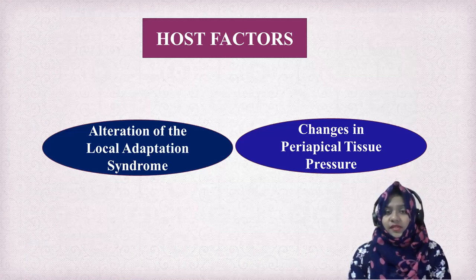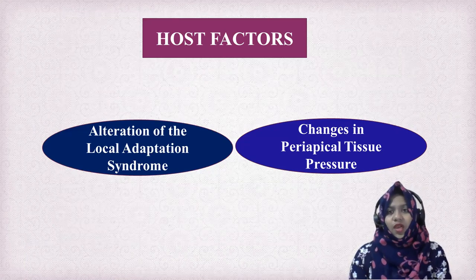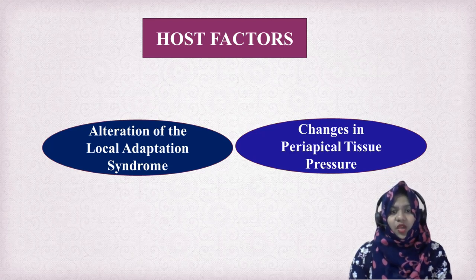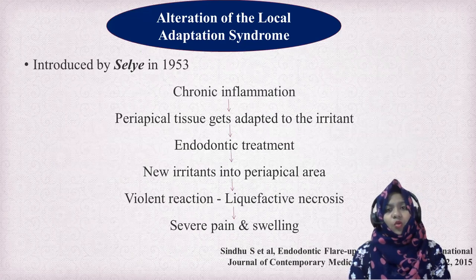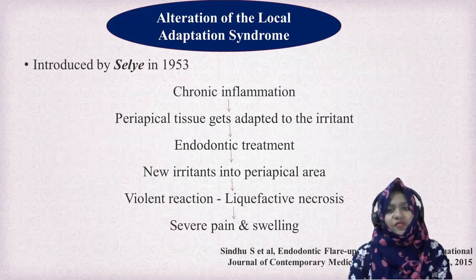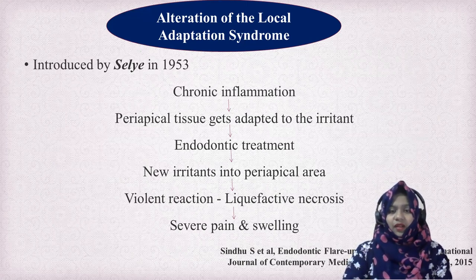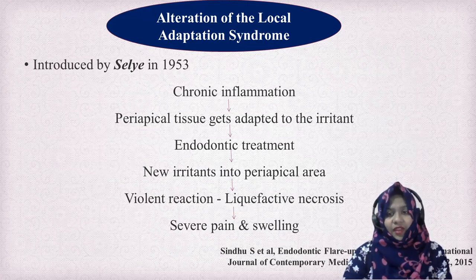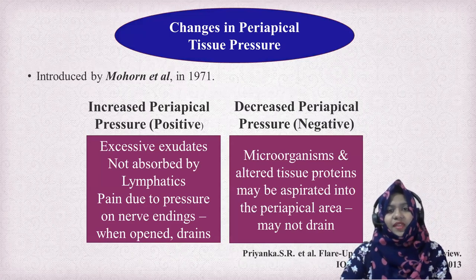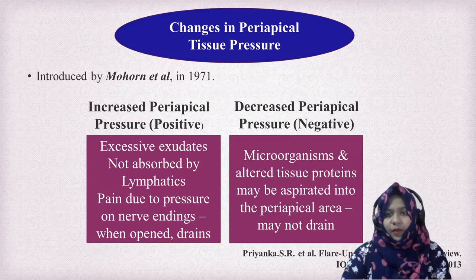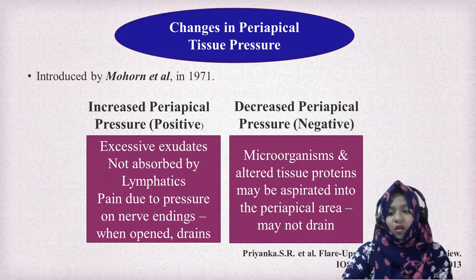Coming to host factors, the second major cause. Host plays an important role in causing flare-up through two mechanisms: alteration of the local adaptation syndrome and changes in periapical tissue pressure. The local adaptation syndrome was introduced by Selye in 1953. In chronic inflammation, the periapical tissue gets adapted to the irritant. When endodontic treatment is started, new irritants are introduced in the periapical area, leading to violent reaction, causing liquefactive necrosis, leading to severe pain and swelling. Regarding periapical tissue pressure: when increased, excessive exudates not absorbed by lymphatics cause pressure on nerve endings, leading to pain. When decreased, microorganisms may be aspirated into the periapical area and may not drain, leading to flare-up.